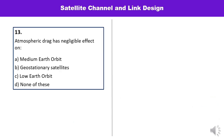Next question: atmospheric drag has negligible effect on which particular orbit? The options are MEO, geostationary satellites, low earth orbit, and none of these. Atmospheric drag has negligible effect on geostationary satellites — option B is correct — because their altitude is very high, so atmospheric drag has very little effect.